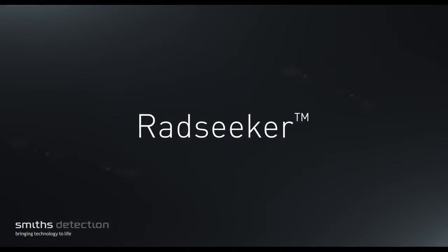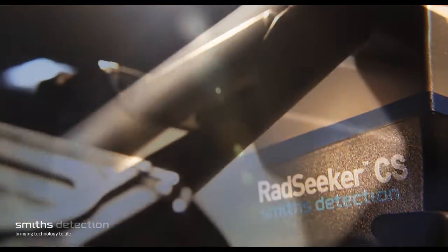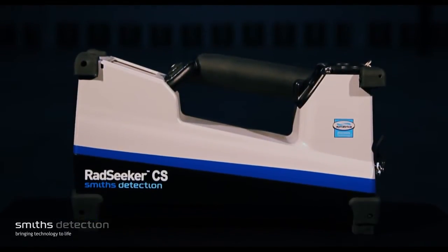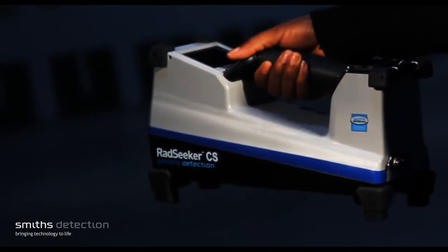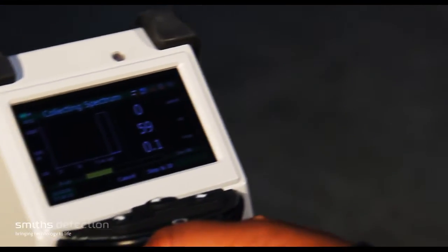The Smiths Detection RadSeeker is a handheld, rugged, and extremely accurate radiation detector and identifier. Key benefits include the use of advanced spectrum processing and identification algorithms for superior identification accuracy. No field calibration is required due to continuous automatic stabilization.